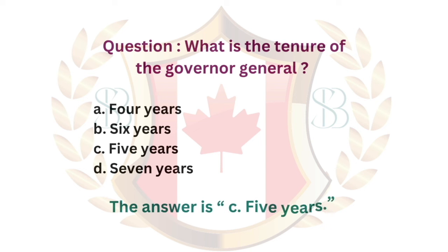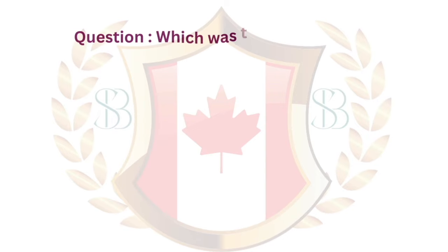Question. What is the tenure of the Governor General? a. Four years. b. Six years. c. Five years. d. Seven years. The answer is c. Five years.